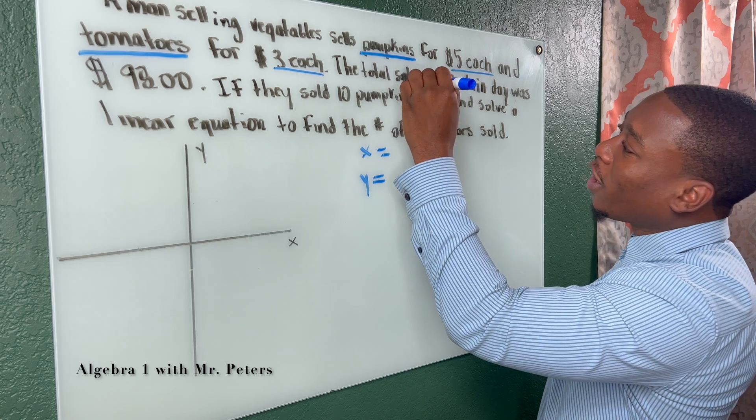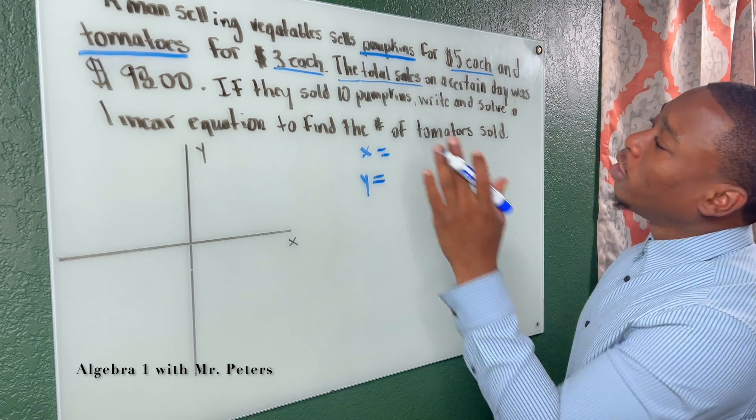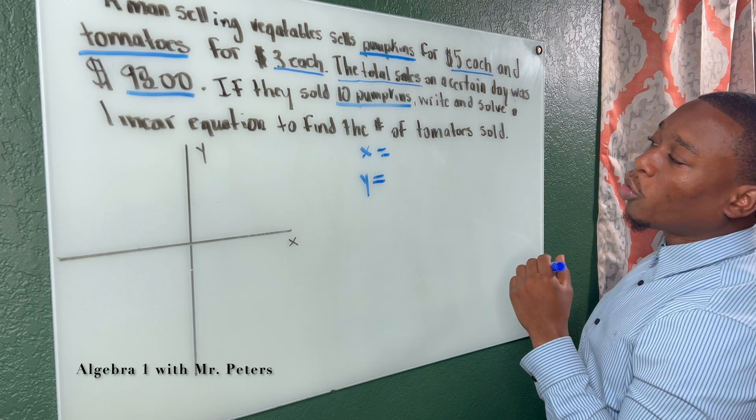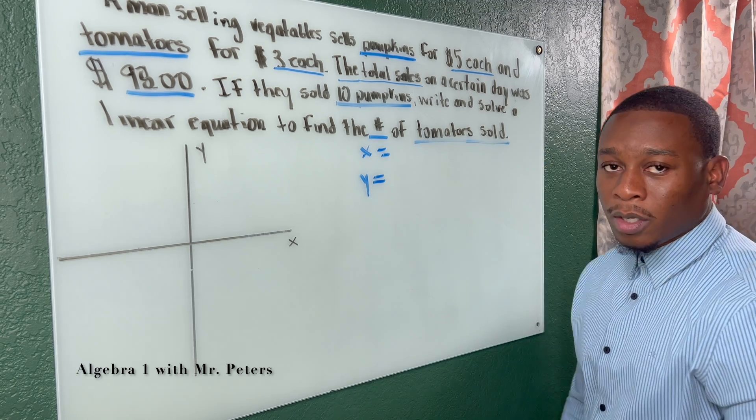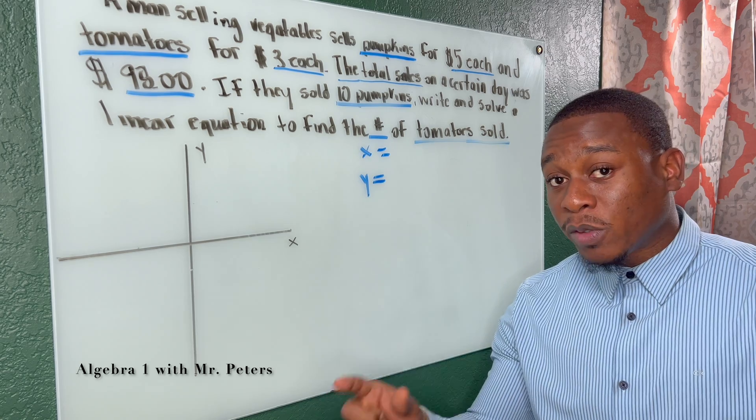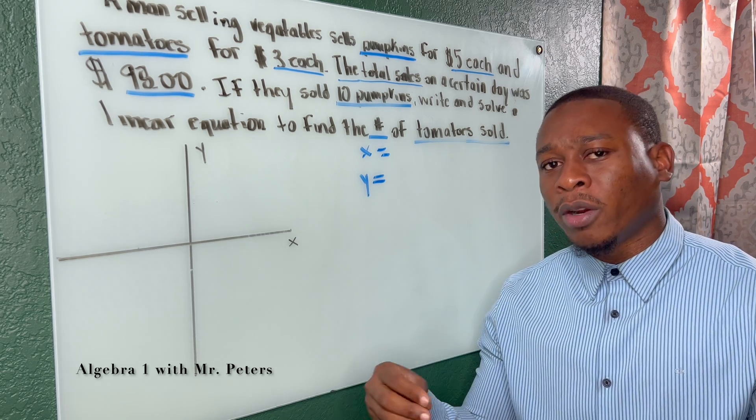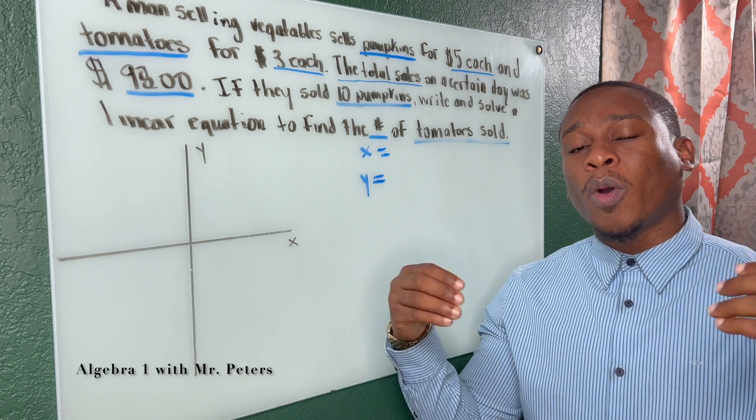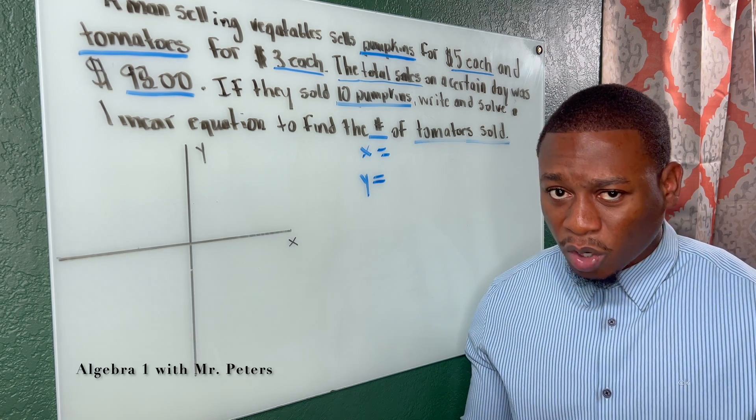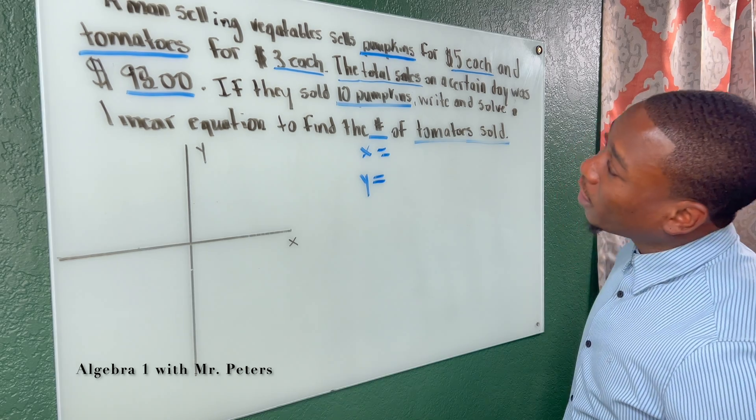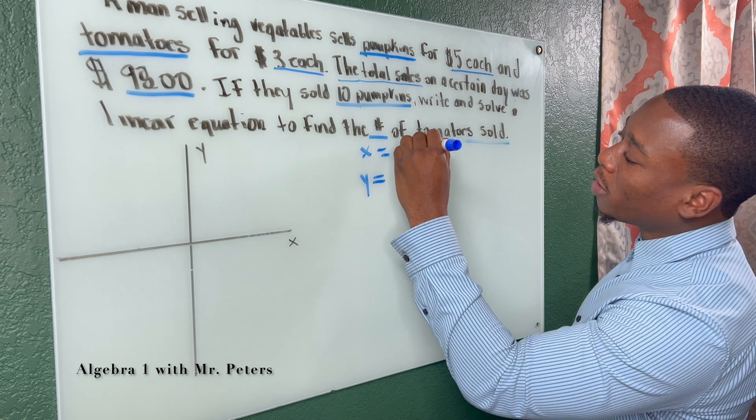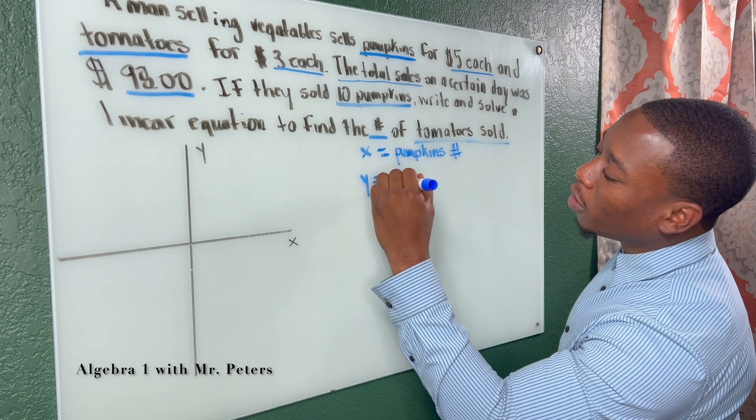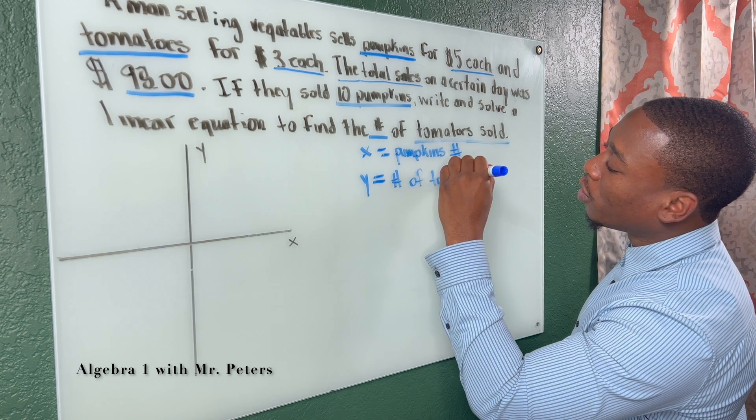Then we continue. The total sales on a certain day was $98. If they sold 10 pumpkins, write and solve a linear equation to find out the number of tomatoes sold. So even though it seems elementary, always highlight the most important information because one, it makes it easier and it's going to be more organized for you. And two, they will throw out extra numbers and variables. And when I say variables, I just mean they're going to throw out tricks to make you think that, hey, I need to be concerned about this when you don't. So let's think about this. We're going to make X our pumpkins. So X stands for the number of pumpkins. Y is going to stand for the number of tomatoes because we do not know.